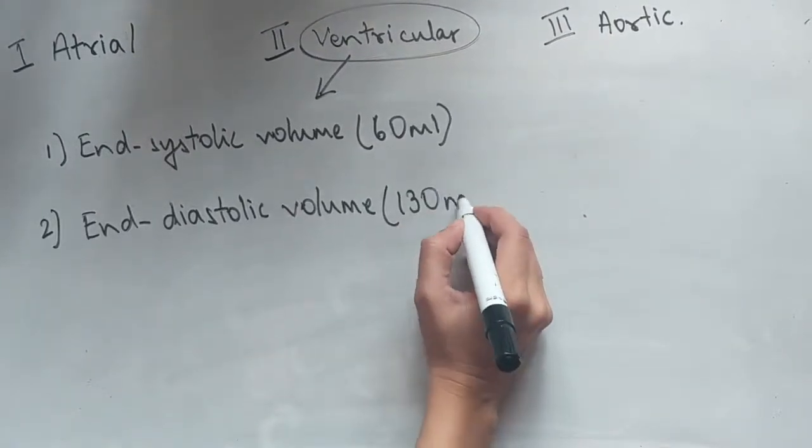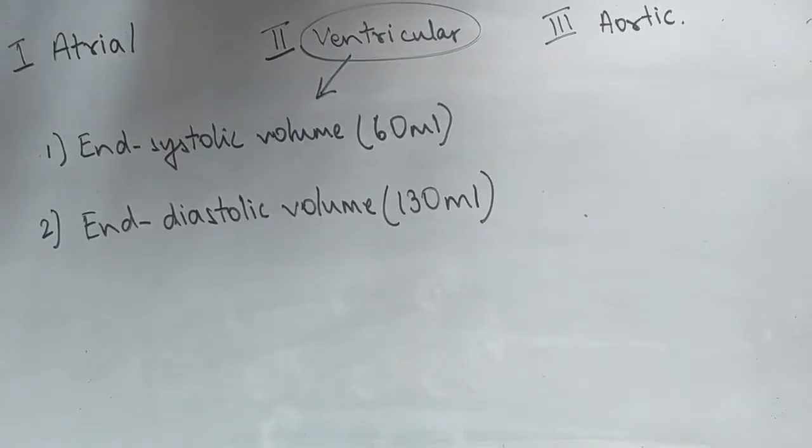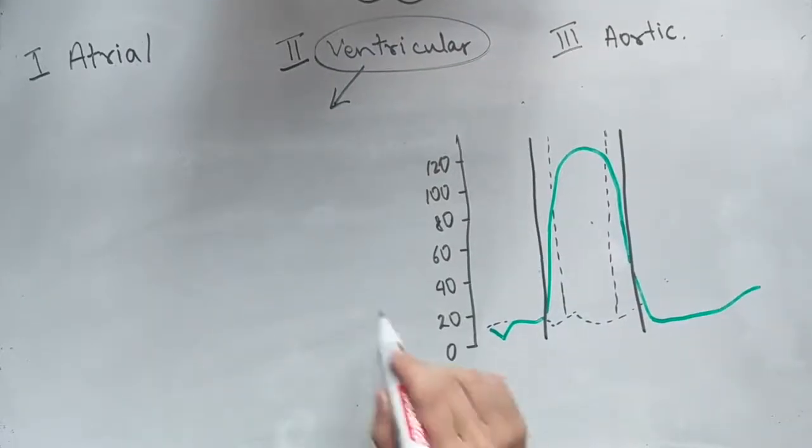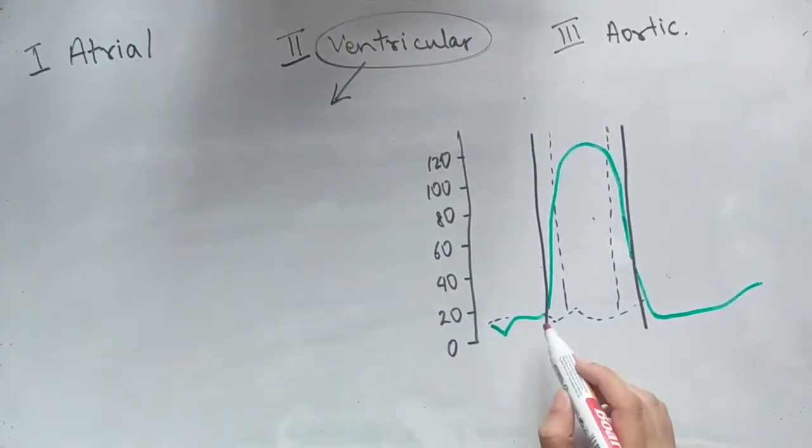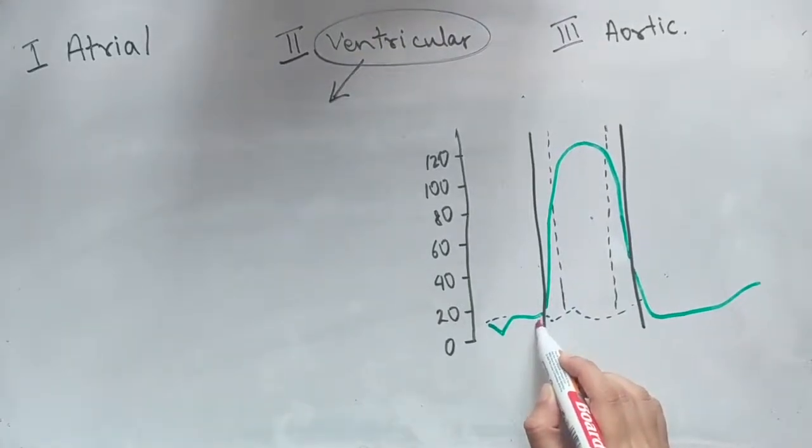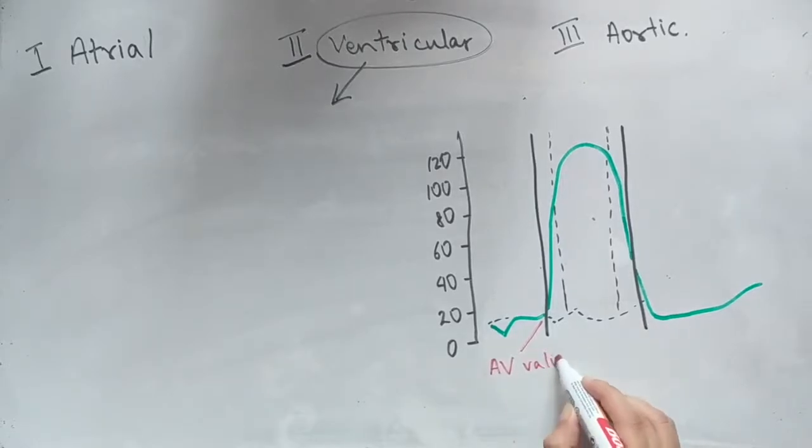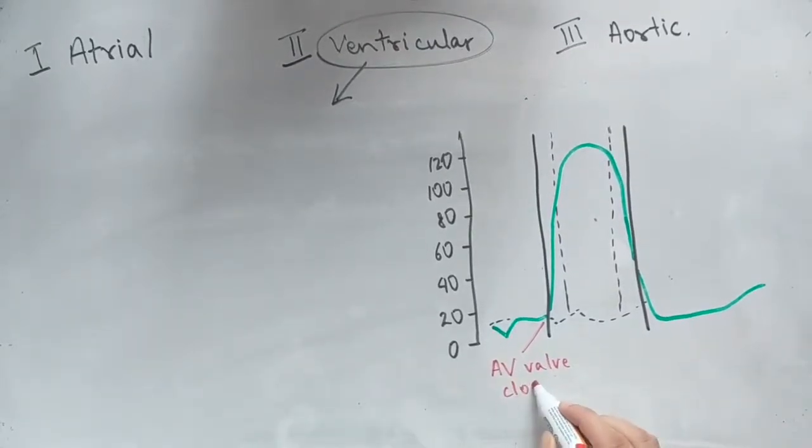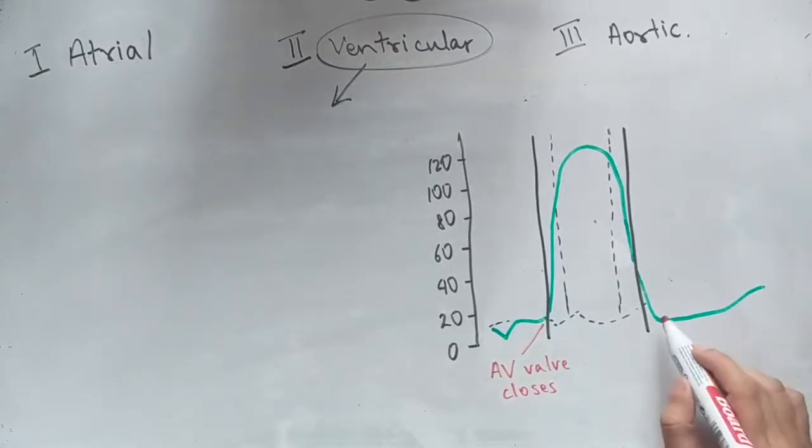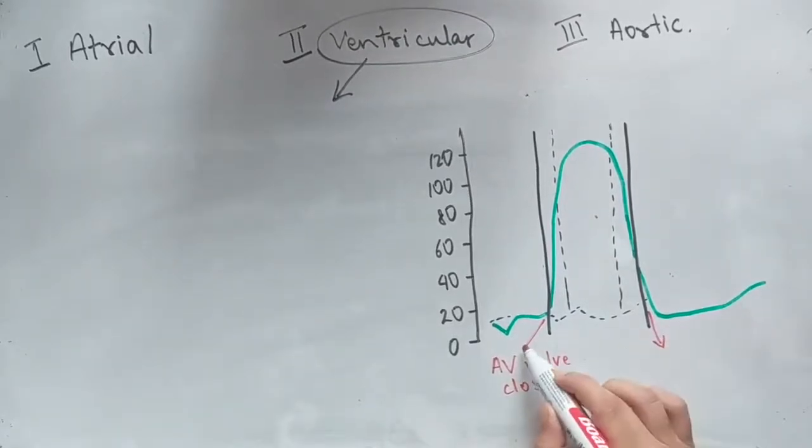So this is what the graph looks like. The dotted lines mark the valve closure or opening. So you've got the atrioventricular valve closes in the beginning before the ejection fraction and then you've got the atrioventricular valve opening when there is diastole.